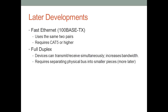Full duplex becomes possible when there are only two devices on an Ethernet segment, so we don't have to worry about more than one device talking at the same time. As a result, devices can transmit and receive simultaneously — like two people in a conversation both talking and both fully understanding each other, though that's an impossibility in most conversational situations.